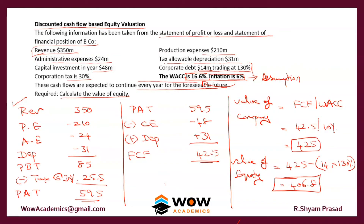The 425 is the company value. To find equity, deduct the debt. The debt is 14 million trading at a premium of 130%, so multiply accordingly and deduct it from 425 to get the equity value. That completes this problem.